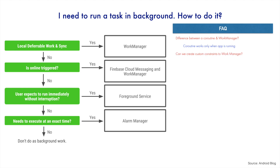The next question is: can we create a custom constraint in work manager? For example, you might want to execute a worker only if a cellular network or Wi-Fi network is available — those are constraints. Can you create your own custom constraint to trigger a worker? Well, as of now, that facility is not yet available in the latest library, but it may come in the future.